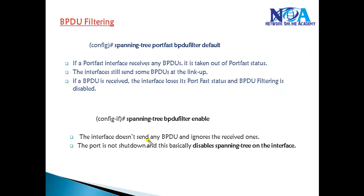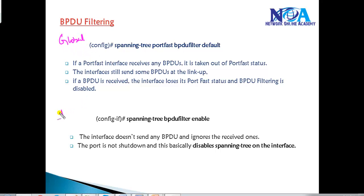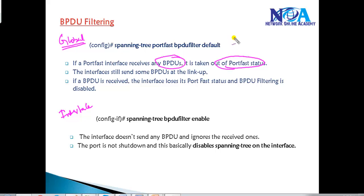BPDU Filter can be enabled either globally in global configuration mode or on a specific interface. In both cases, it does not put the port into error-disable state; instead it re-enables spanning tree. When configured globally, if a port-fast port receives a BPDU message, it removes the port-fast status from that port, re-enables spanning tree, and BPDU filtering is also disabled. The interface will still send and receive BPDU messages normally.